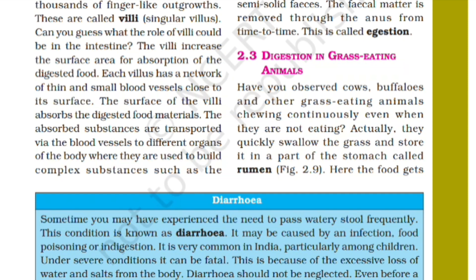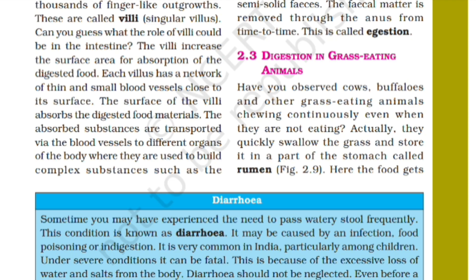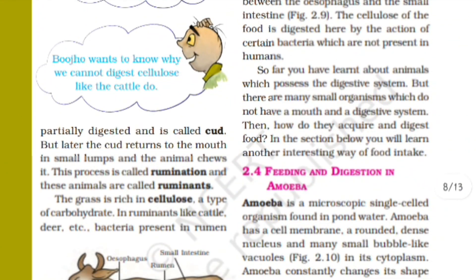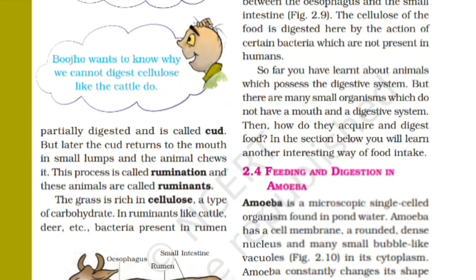Cows, buffaloes and other grass-eating animals constantly chew even when they are not eating anything. Actually, they quickly swallow the grass and store it in a part of the stomach called the rumen. Here the food gets partially digested and is called cud.